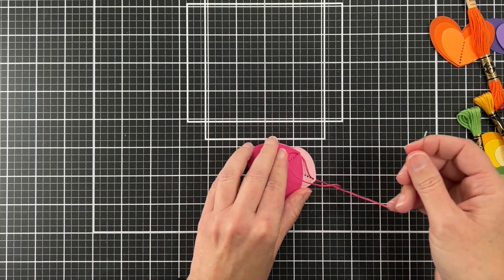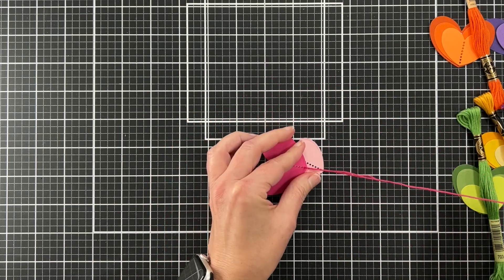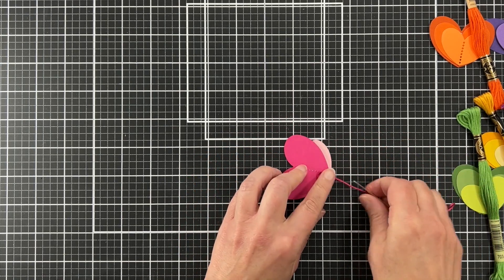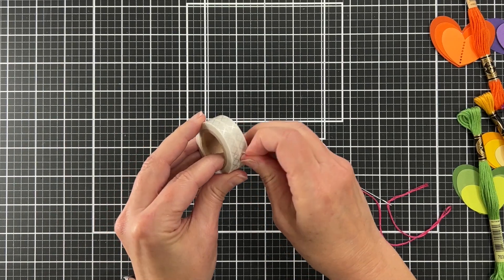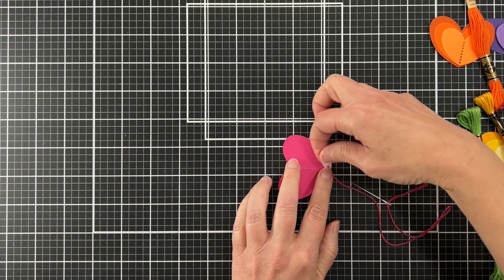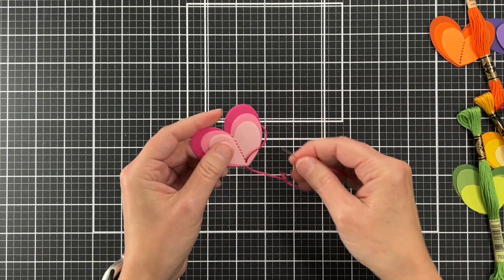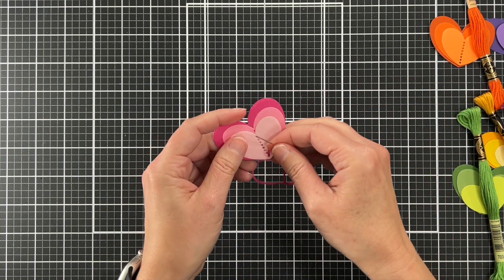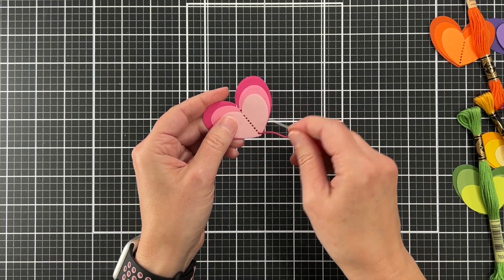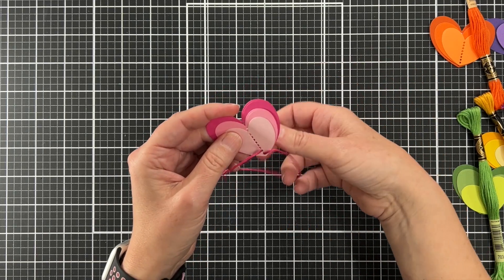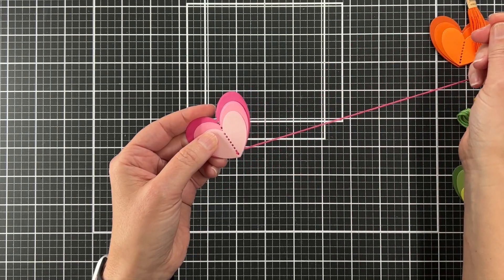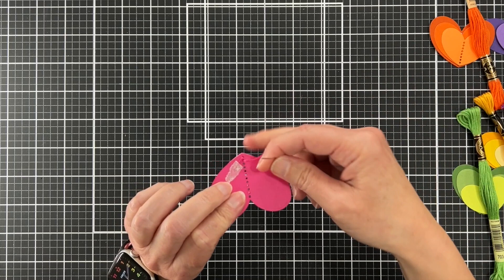What I'm doing is I'm just threading the needle through the bottom hole of each heart and I'm going to secure that loose piece with some washi tape at the back. Now I'm going to leave this in real time so you can see how quickly this goes. I'm just going to go from the bottom hole up to the next hole, and then once I have that fed through, I'm going to jump up two holes.